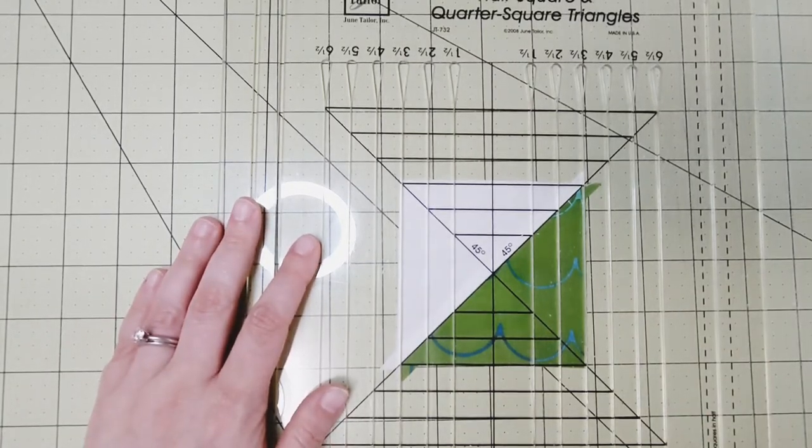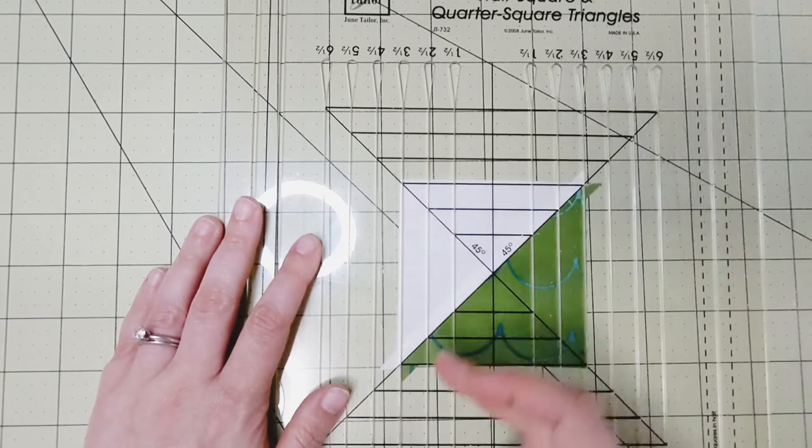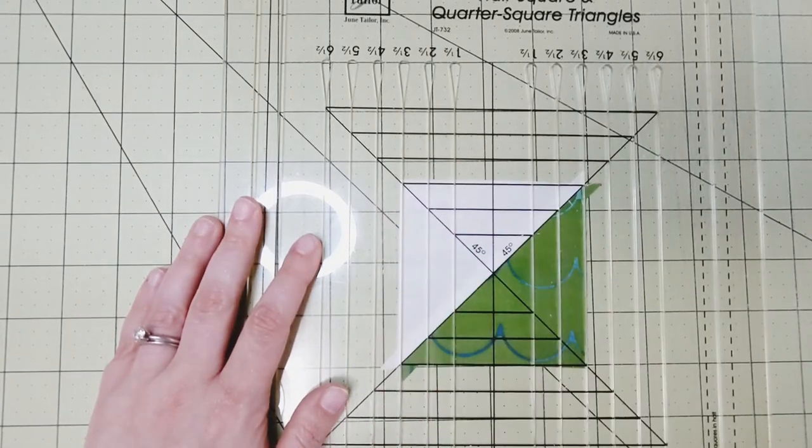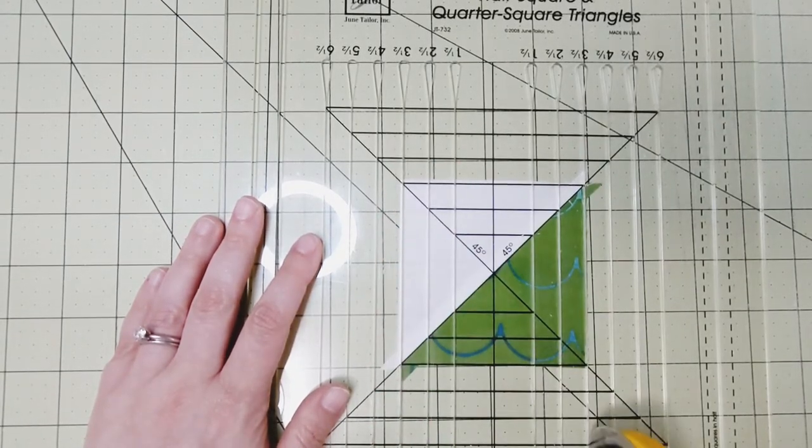And so now that I do, I can cut along this three and a half inch line since these are three and a half inch unfinished HSTs.